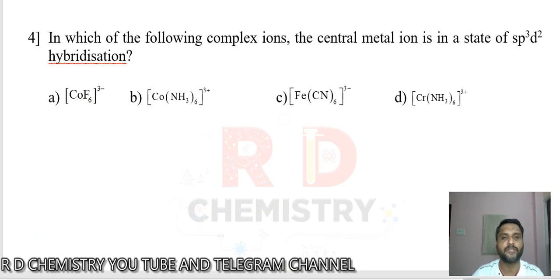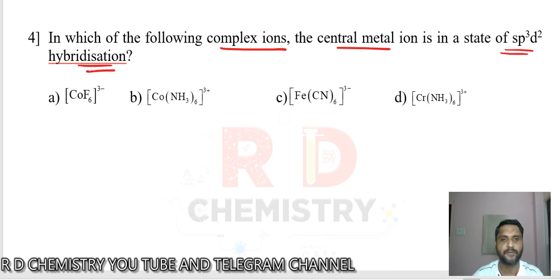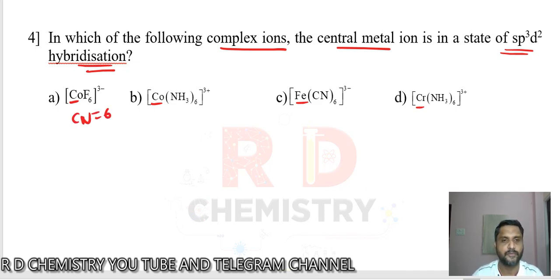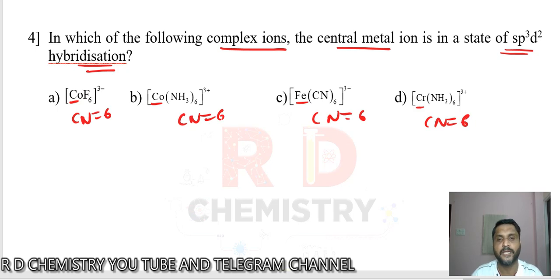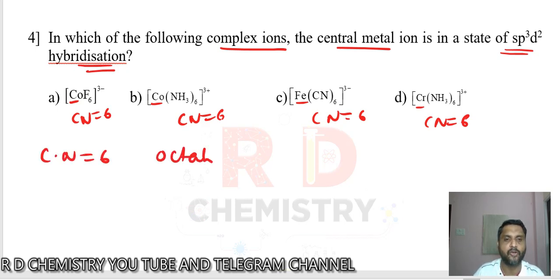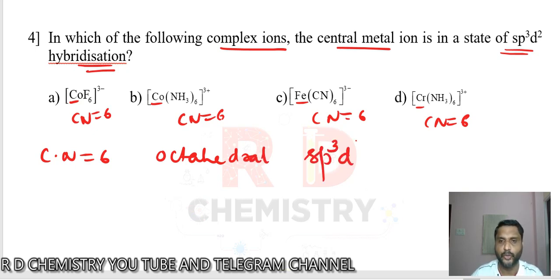Question number 4: in which of the following complex ions is the central metal in SP3D2 hybridization? The options involve cobalt, cobalt, iron, and chromium as different central metal atoms. All have coordination number 6 because all ligands are monodentate with 6 donor atoms. Whenever coordination number equals 6, it is an octahedral complex. The hybridization should be either SP3D2 or D2SP3.